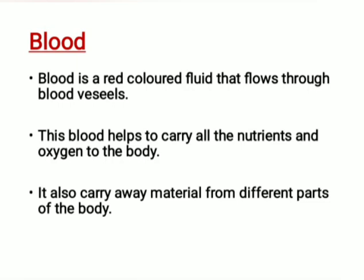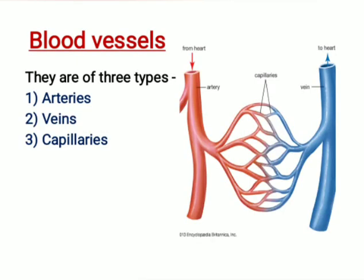Blood: a normal human has four to five liters of blood. Blood is a red colored fluid that flows through blood vessels. This blood helps to carry all the nutrients and oxygen to the body. It also carries away waste materials from different parts of the body.